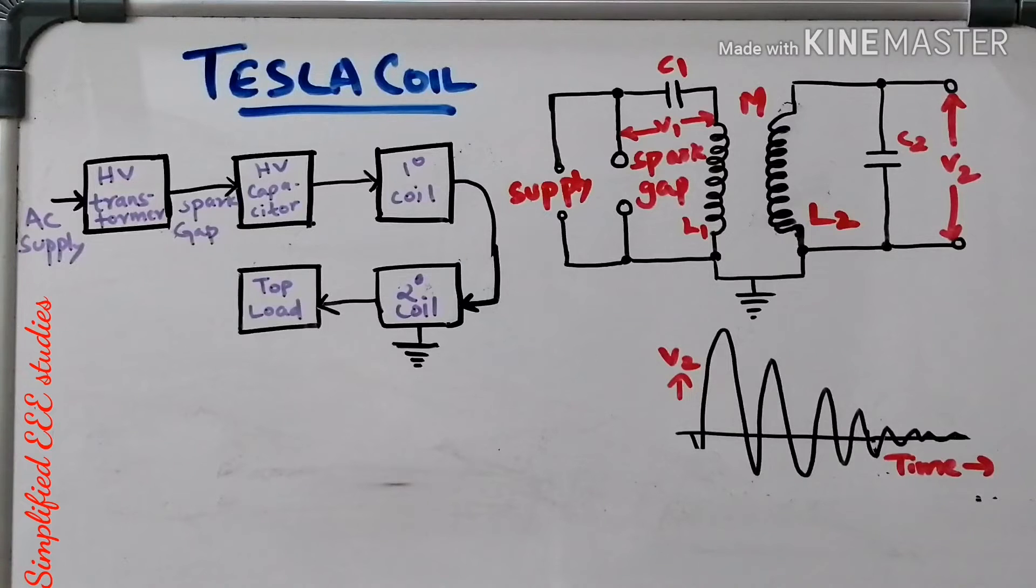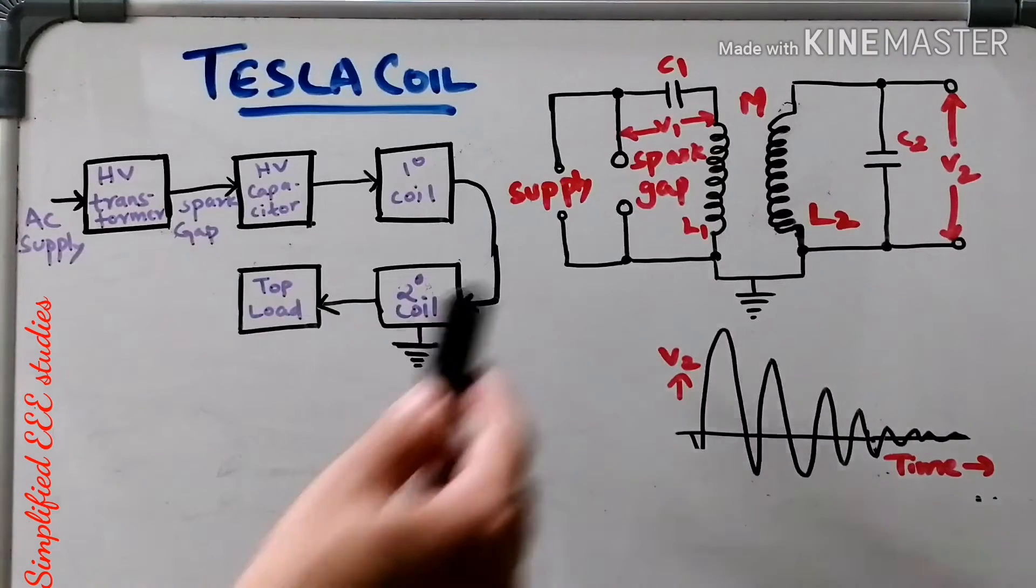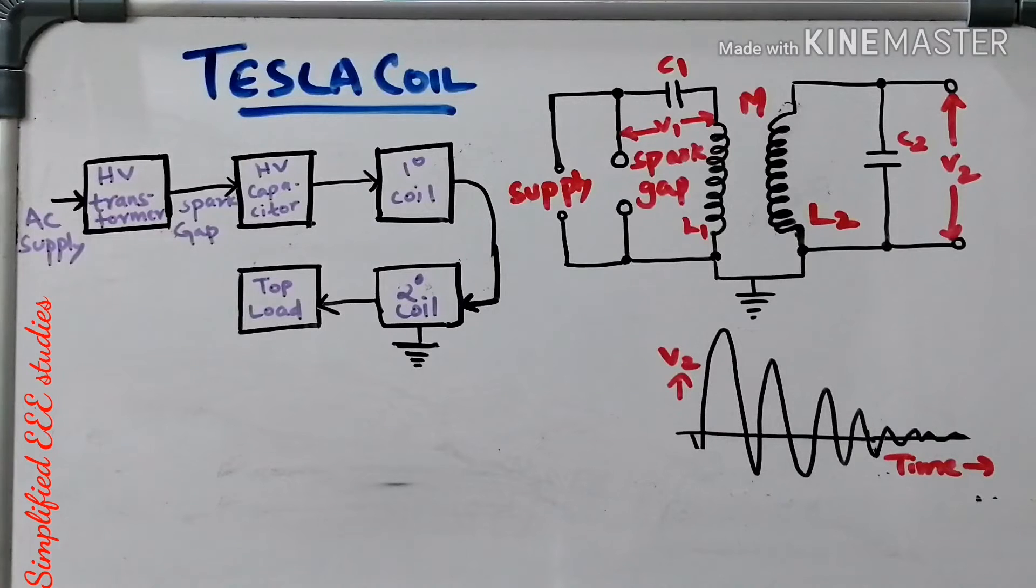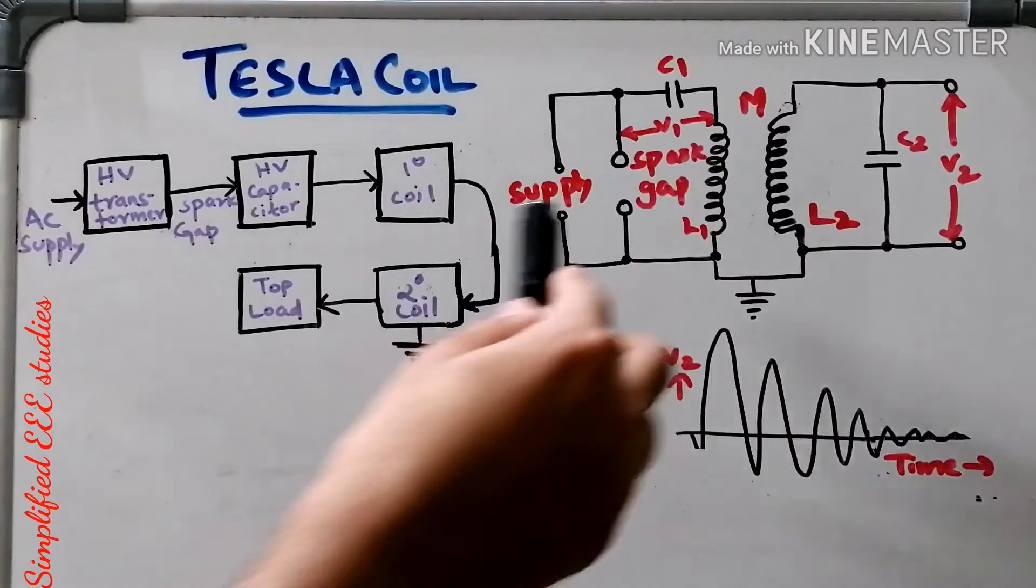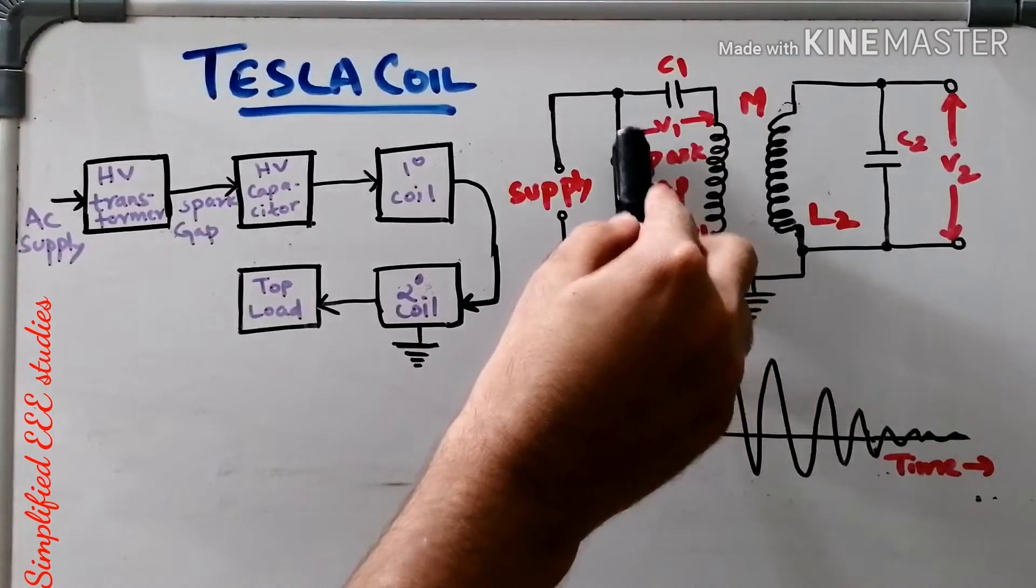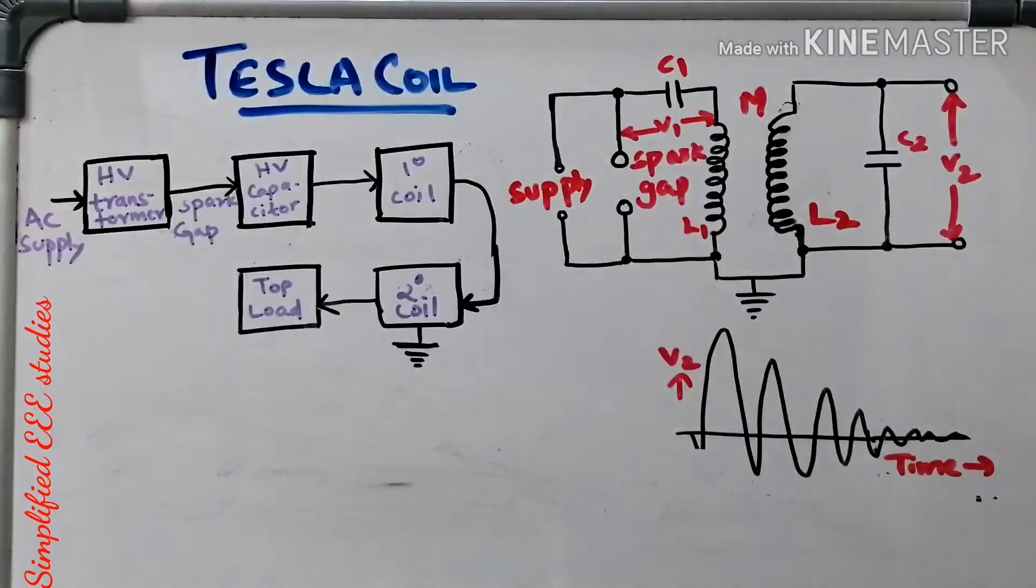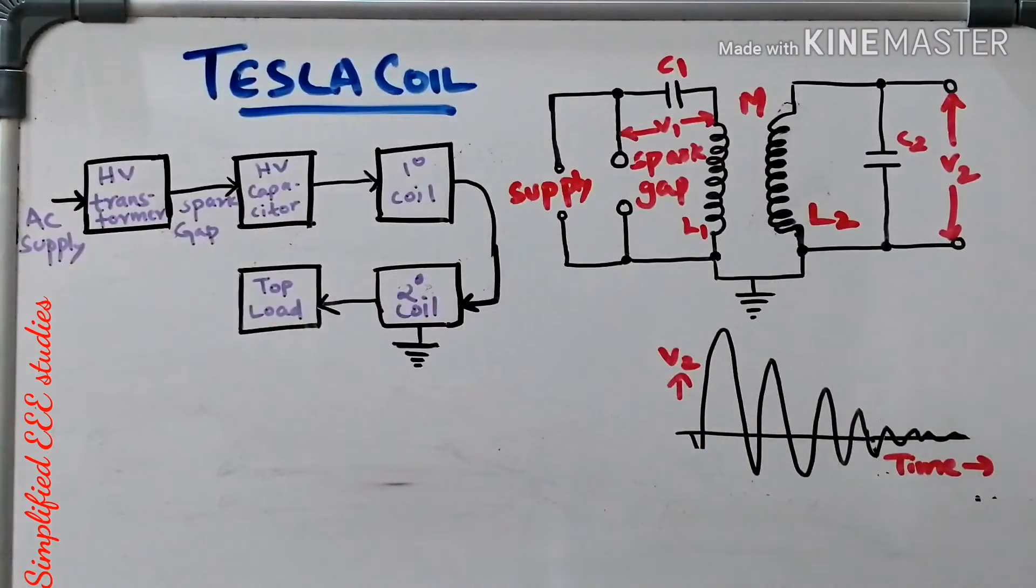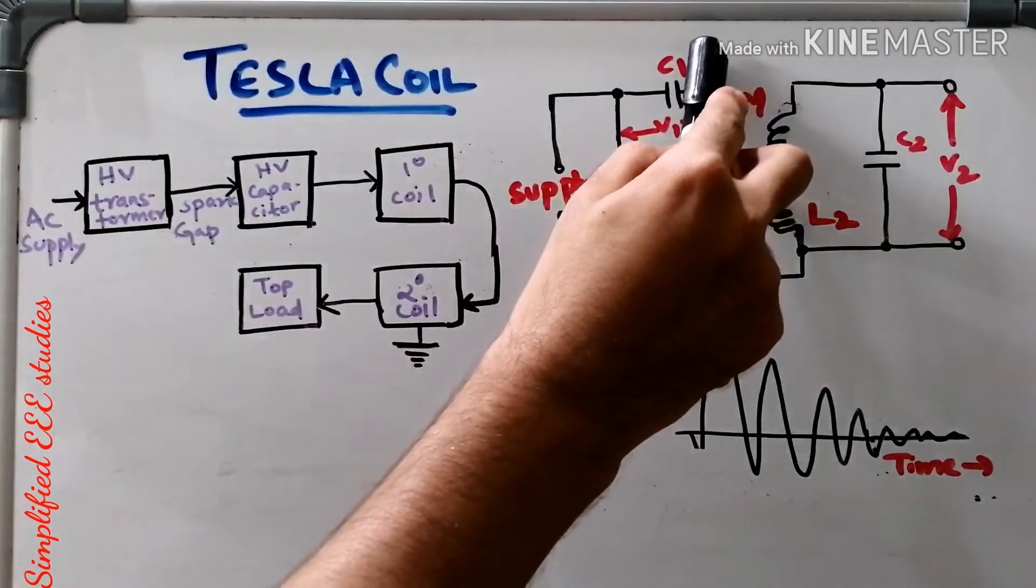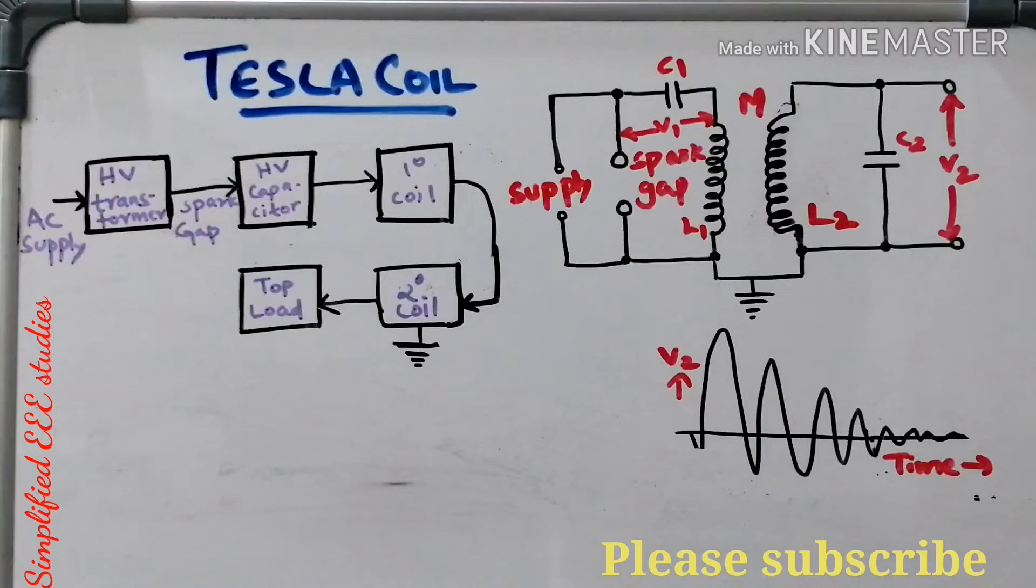Now let us discuss about how does Tesla coil operate. What is the working of Tesla coil. First and foremost thing, we have to provide suitable supply by using auto transformer. Whenever we are going to provide the suitable supply voltage, the spark gap that is going to operate. As I said earlier, this spark gap that will be acting as a switch. Therefore, the capacitor C1 that is getting fully charged.